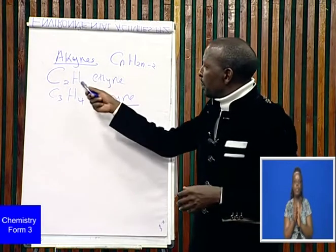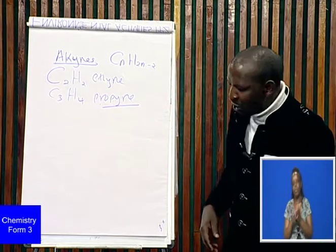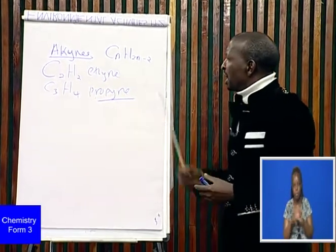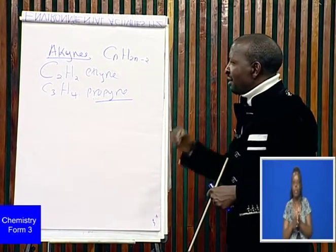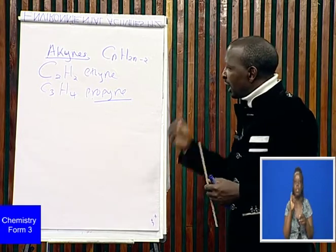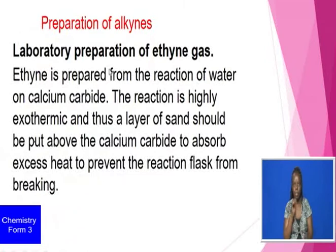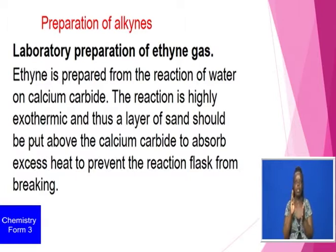Ethyne is prepared in the laboratory by reacting water with calcium carbide in order to get calcium hydroxide plus ethyne gas. The reaction is highly exothermic and a layer of sand is put above the calcium carbide in the flask.